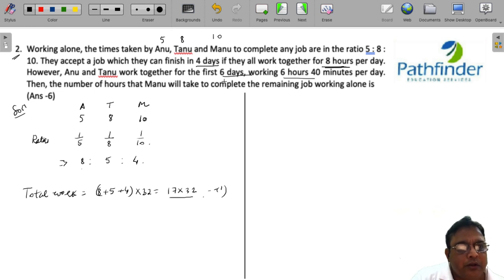Now who all are doing the work? Anu and Tanu, they work for 6 days at 6 hours and 40 minutes, and Manu will do the same work in certain number of hours. We don't know how many hours Manu has worked.